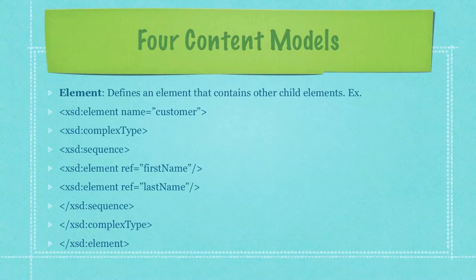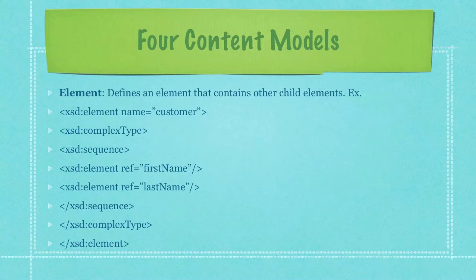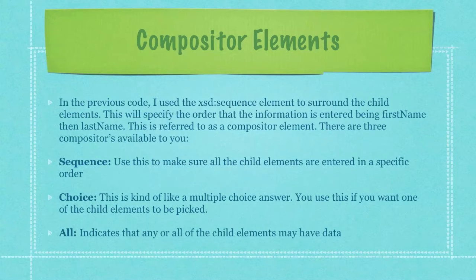You can see that I'm defining an element named first name as well as another element named last name. Pay specific attention to the definition on the third line: XSD followed by the word 'sequence.' I used the XSD sequence element to surround the child elements. This specifies the order that the information is entered — first name and then last name. This is referred to as a compositor element.